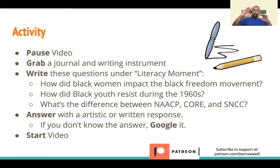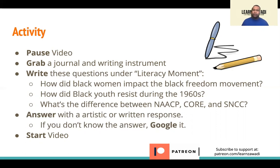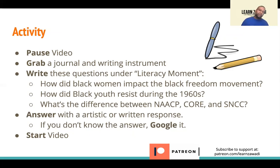Now get into the activity. Once we've finished defining all these terms — black freedom movement, injustice, HBCU versus PWI — we want to write down these questions: How did black women impact the black freedom movement? What did they do, what role did they play? How did black youth resist during the 1960s? What's the difference between the NAACP, CORE, and SNCC? What are these three groups, what do these letters mean, and what separates them all? Once you finish that, you can do an artistic representation of your response to these questions. You can write a response — it doesn't have to be a whole paragraph, just a couple sentences or however way you want to put that to paper. Then start the video again.